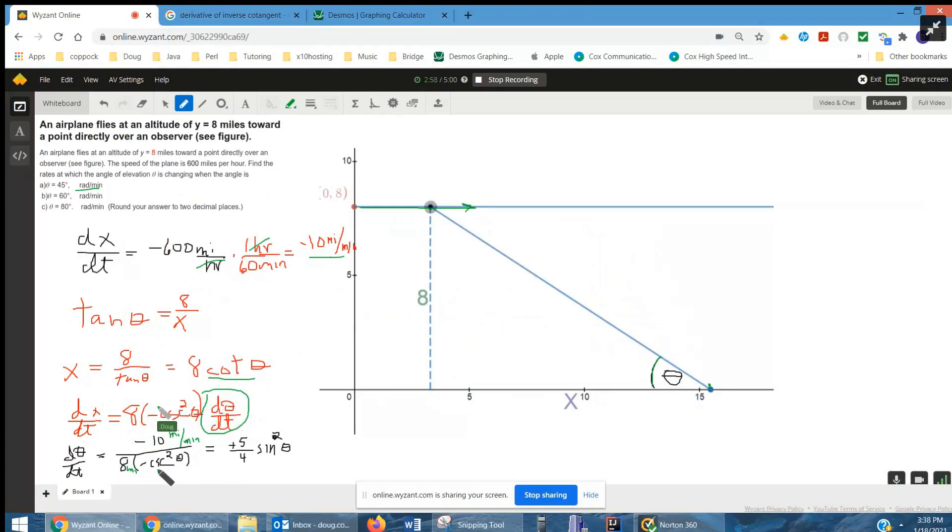And 1 over cosecant squared is the same as sine squared. So if we let theta equal 45 degrees, we get 5 fourths times, well, sine of 45 is radical 2 over 2. So 5 fourths times 1 half is 5 eighths, times 1 half is 5 eighths. And so when theta is 45 degrees, I'd say that theta is increasing at 5 eighths of a radian per minute.